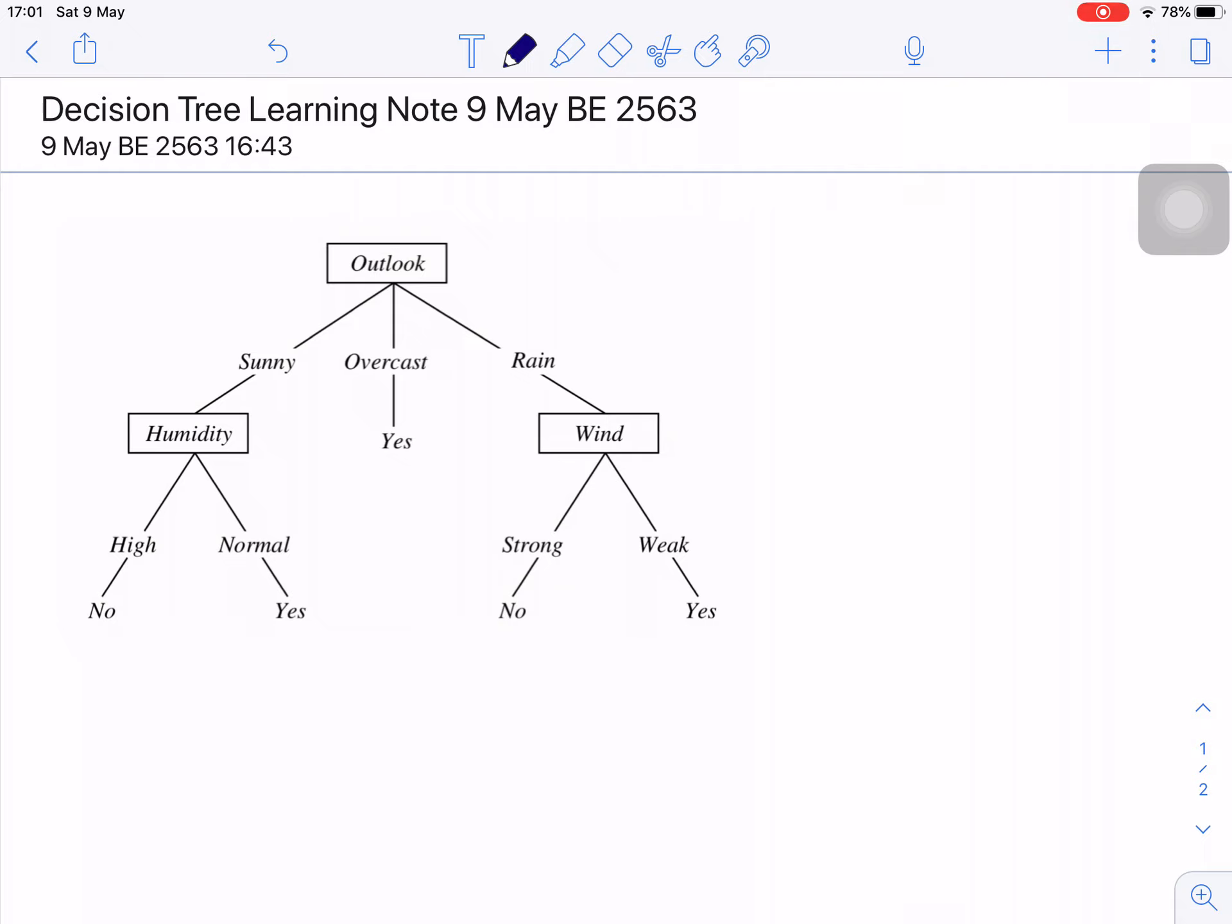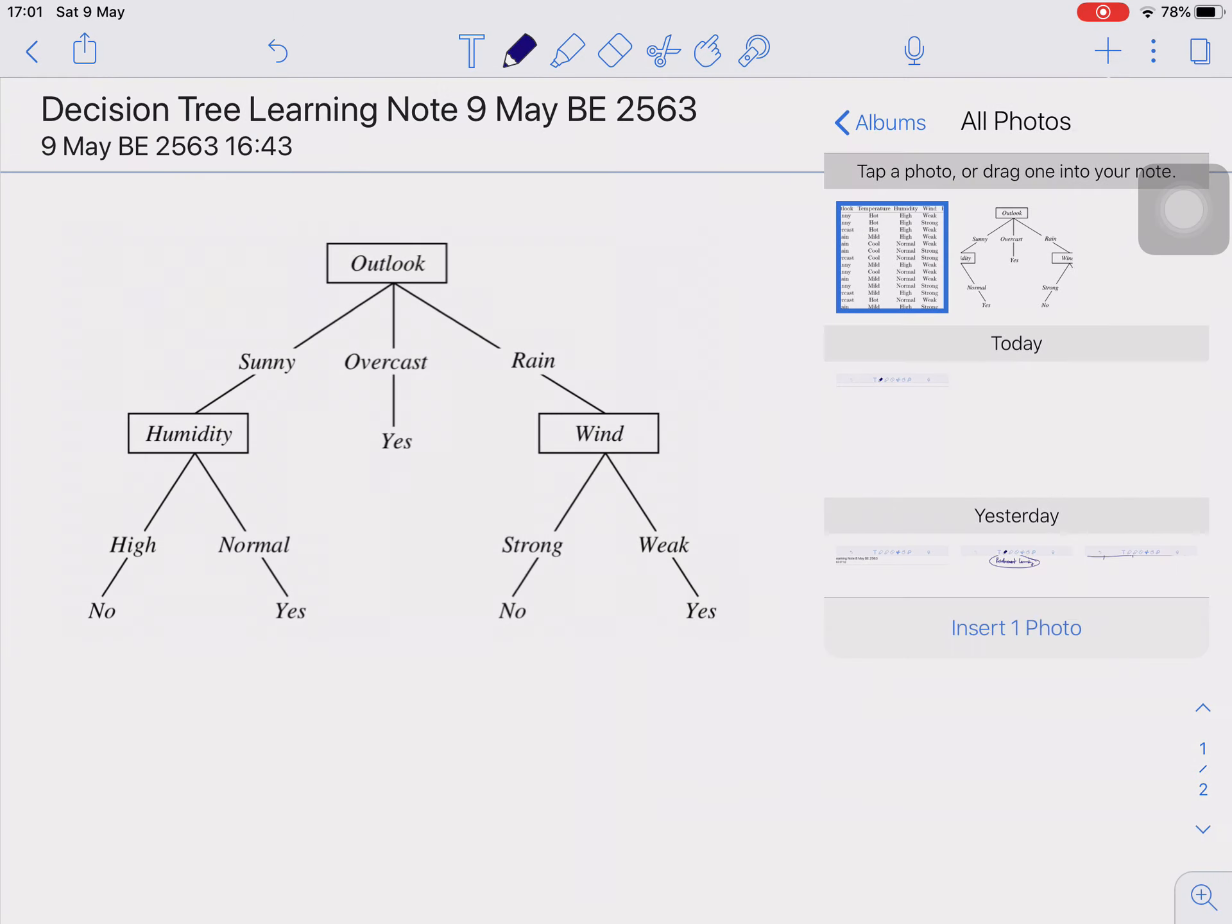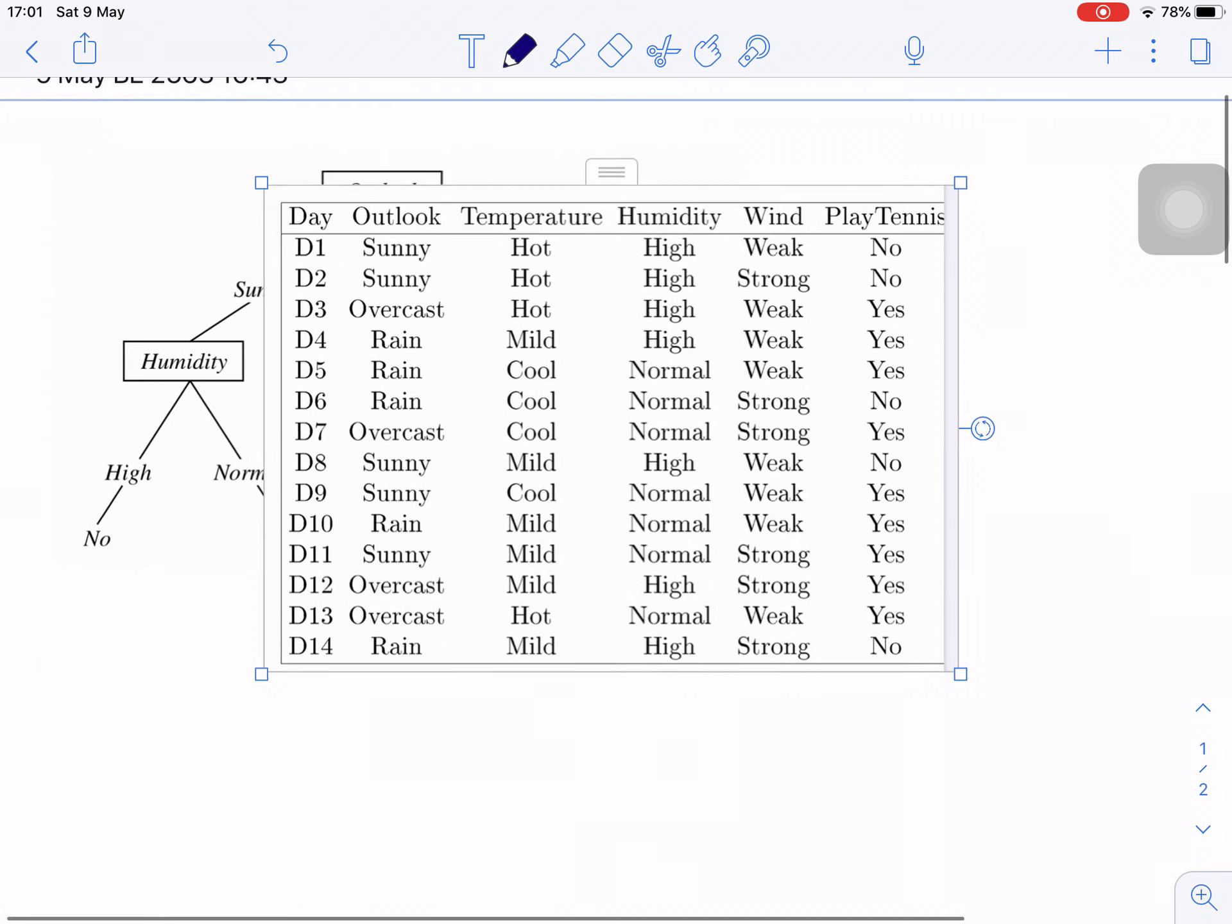The concept of the data is quite simple. You want to play or not play tennis. Check for the condition of the outlook, the humidity, the wind, and the temperature also. The data is like this. I'll show you the data. This is the data.